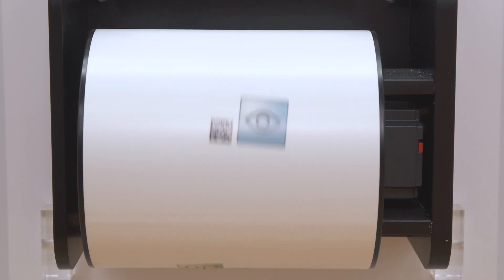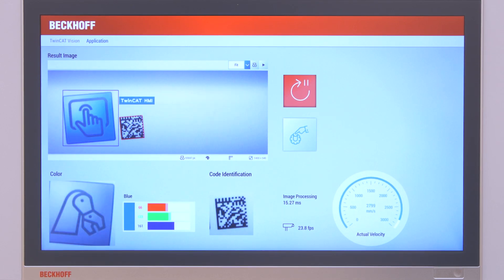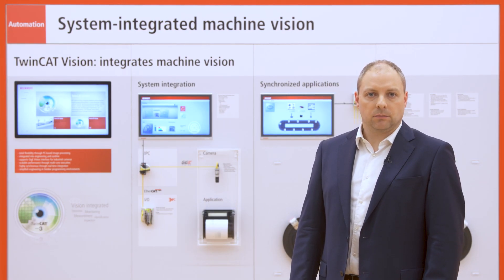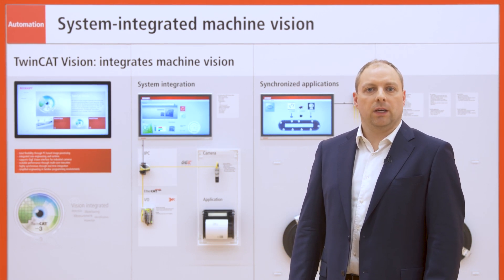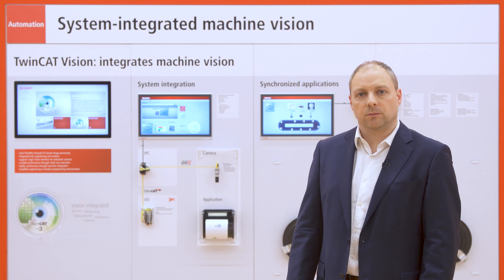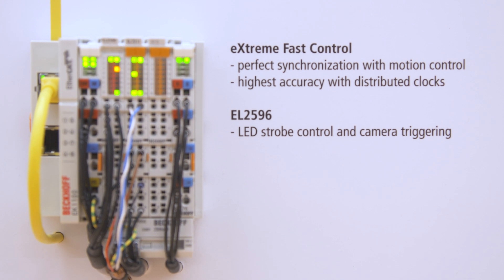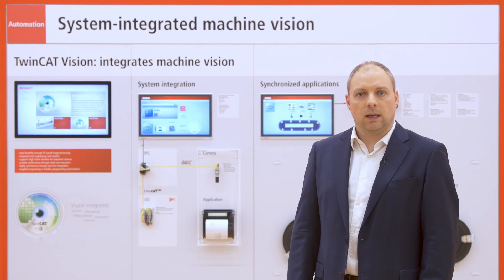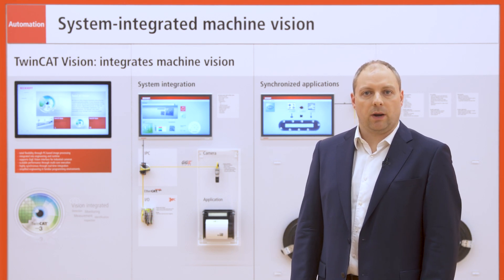Everything is controlled by our smallest IPC, the C6015, with the 4-core ATOM option, which is our entry level for vision. Because of the same real-time base tick and time calculation, we can synchronize the image acquisition very precisely to a motion position. Everything is done by the EtherCAT XFC functionality, and in this case the illumination and camera trigger is synchronized by the EL2596 terminal. The camera is connected with an EtherCAT cable using the GigE Vision protocol directly to the IPC.